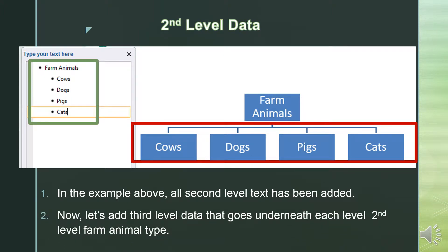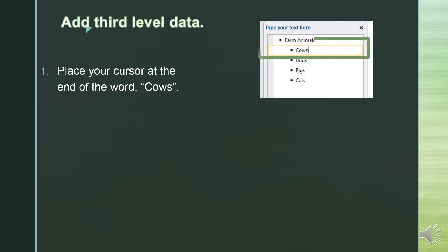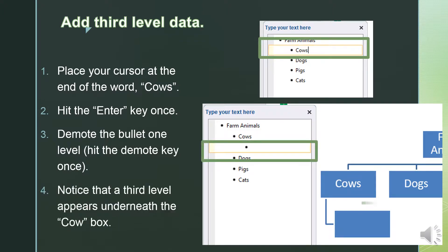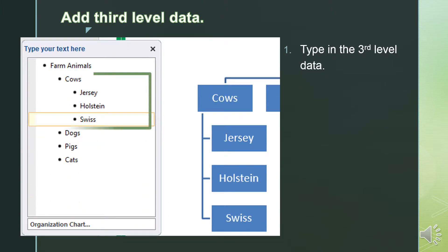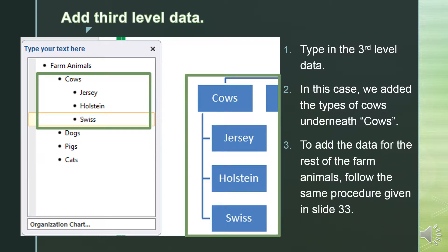Now let's add third level data that goes underneath each second level Farm Animal type. Place your cursor at the end of the word Cows, hit the enter key once, then demote the bullet one level by hitting the Demote key once. Notice that a third level appears underneath the Cow box. Type in the third level data. In this case, underneath Cows, we typed in Jersey, Holstein, and Swiss. To add data for the rest of the farm animals, follow the same procedure. Underneath Cows we have a list that all apply to cows. You'll do the same thing for dogs, pigs, and cats.